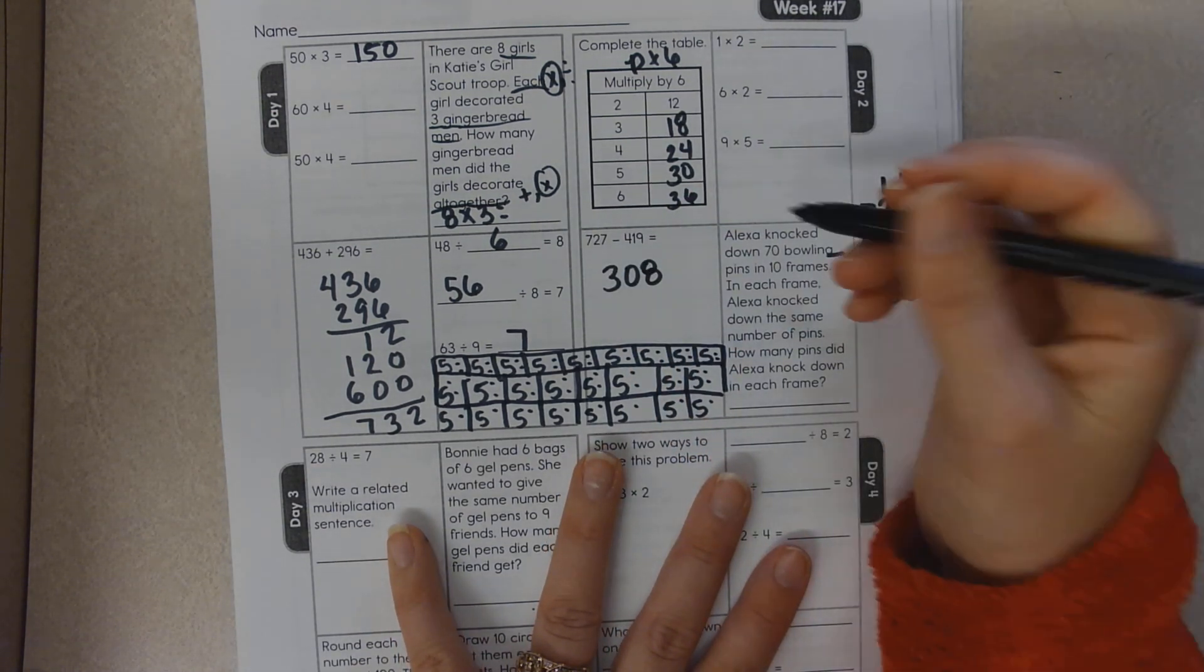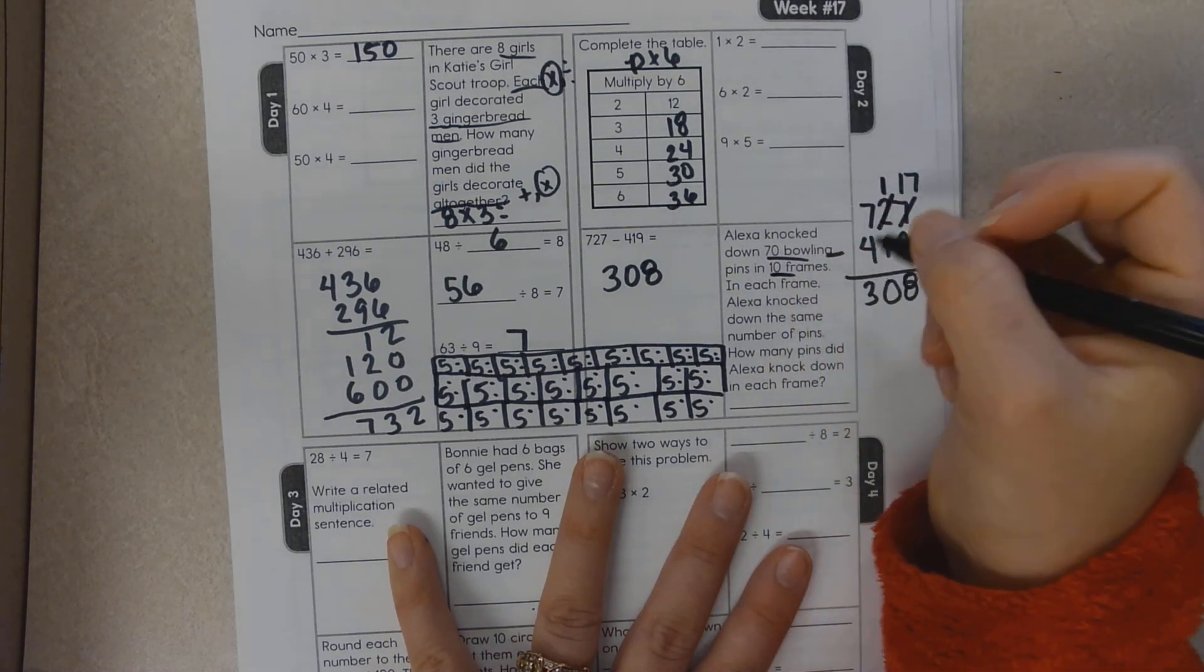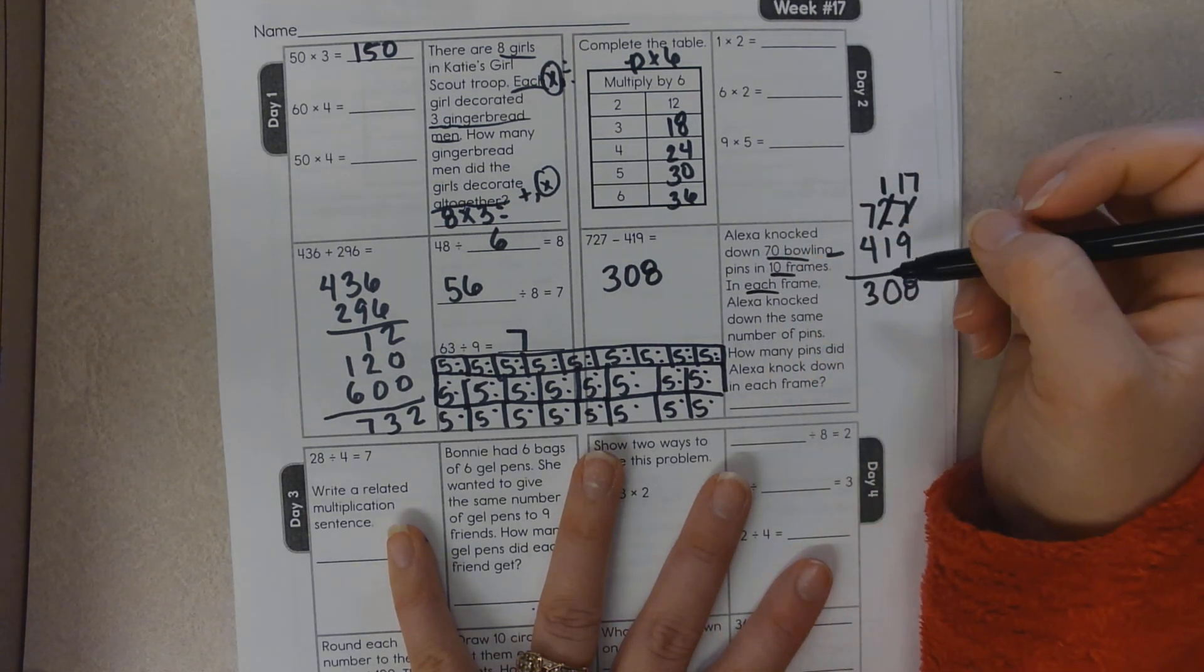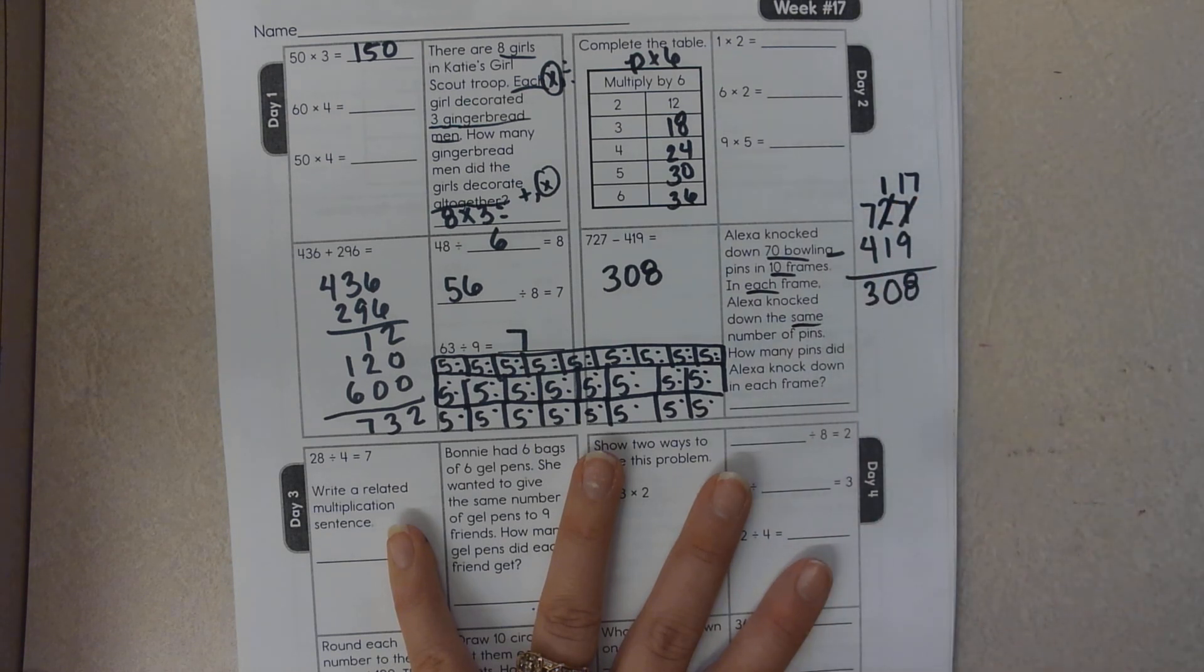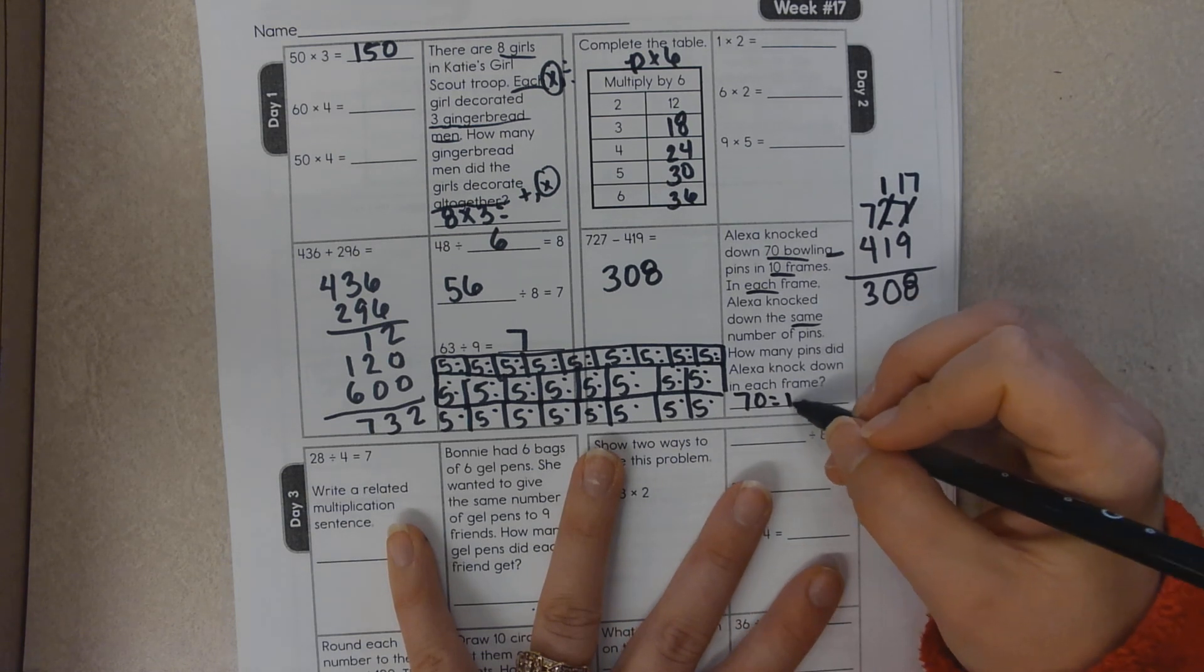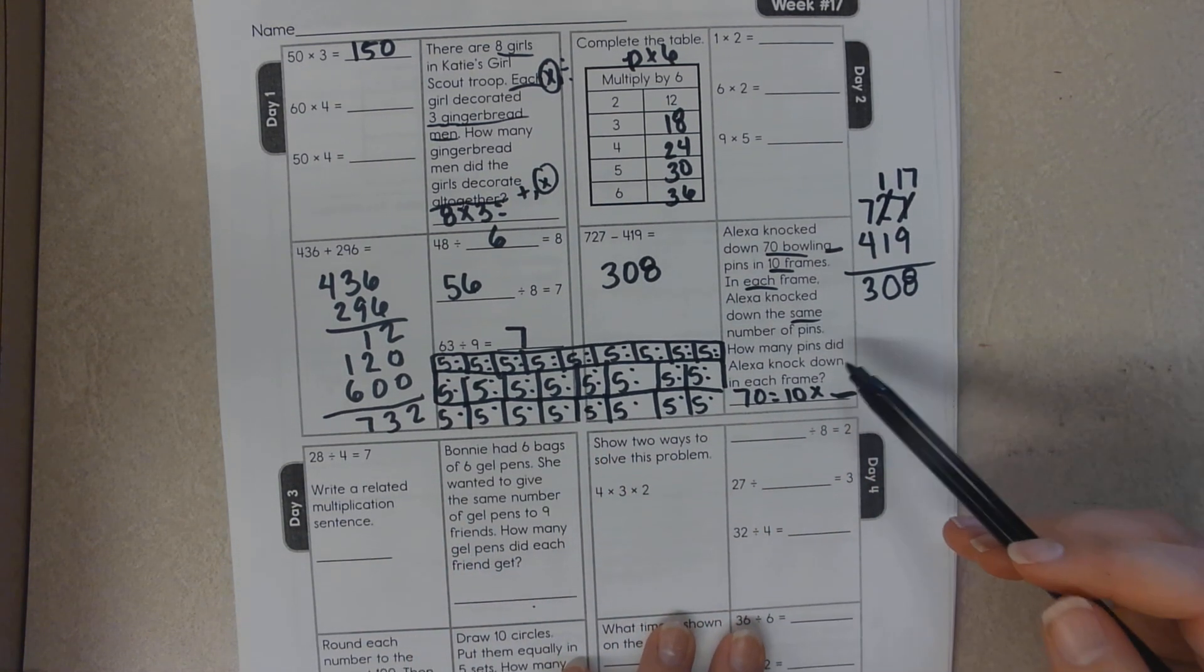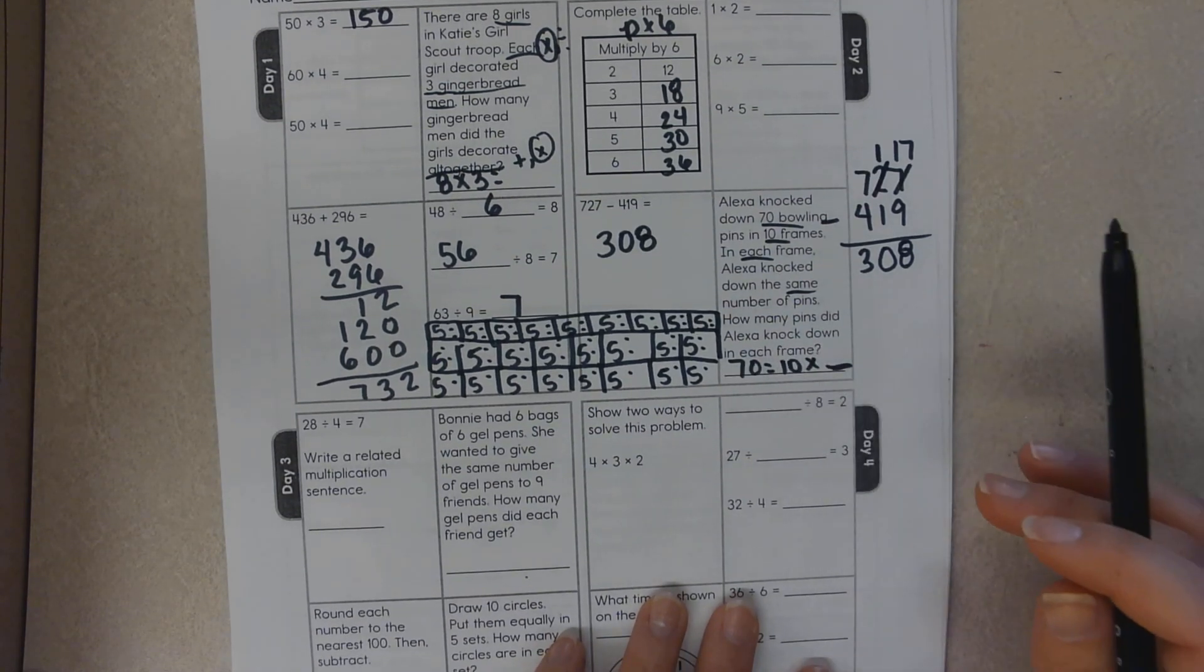Alexa knocked down 70 bowling pins in 10 frames. In each frame, she knocked down the same number. So we know a total is 70. So 10 times something equals 70. So skip count by 10s to get to 70.